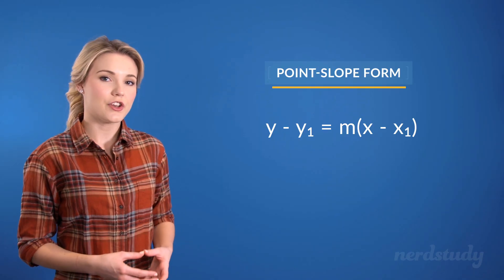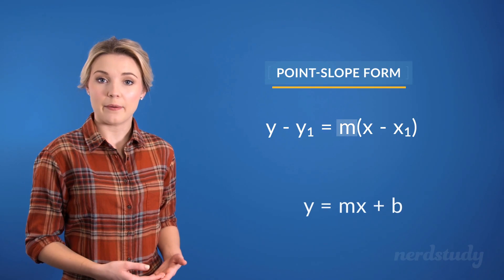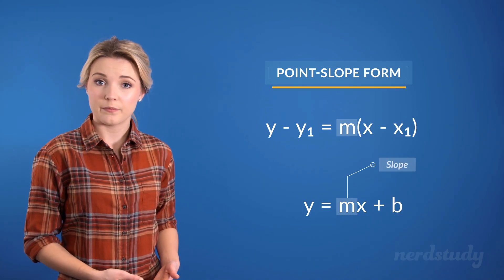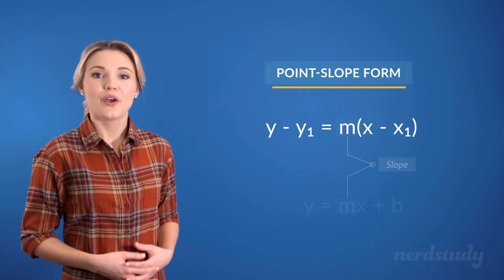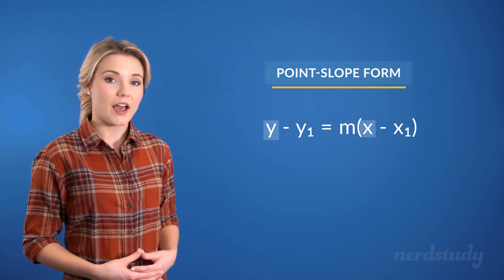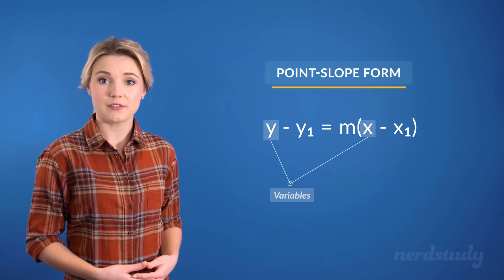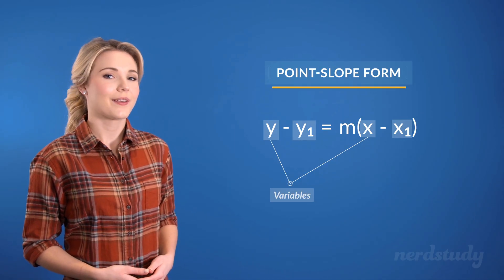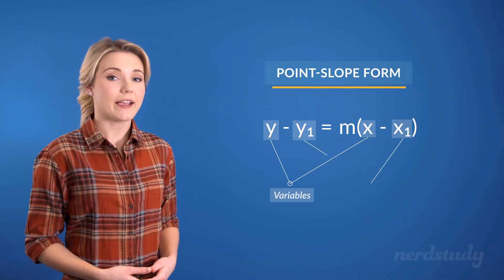Now, the first thing to note here is the m variable. Just like how the m is representative of the slope in the slope-intercept form, the same applies for the point-slope form. We know that the x and the y variables will remain as letters since those are our variables, but then, what is this x1 and this y1?